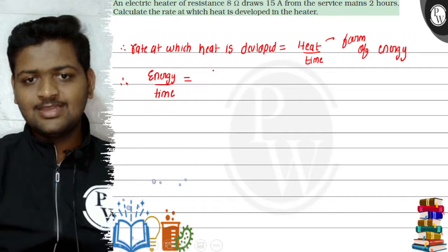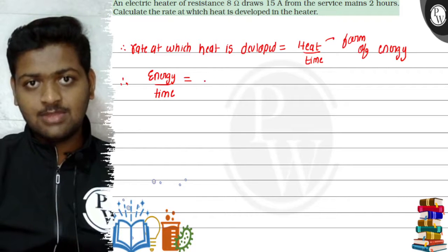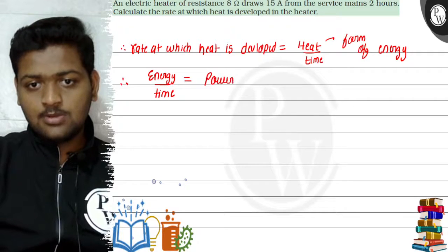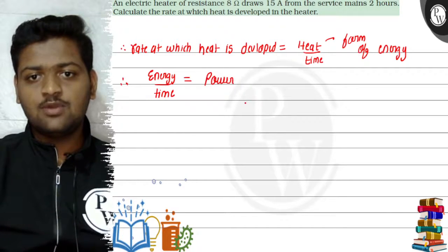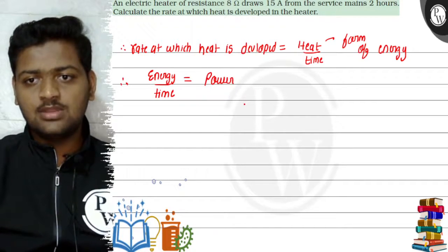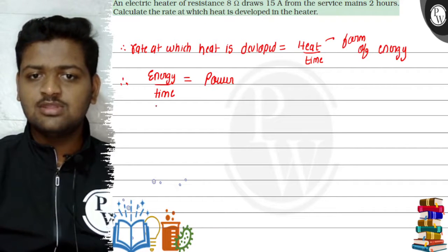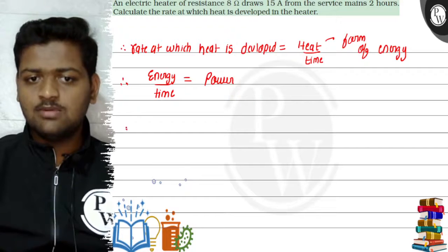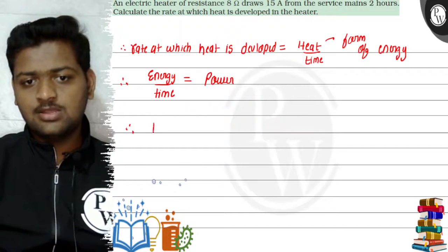And energy upon time can be called as electrical power. Energy upon time is nothing but the basic formula of electrical power. Now what we will do is, since we know that the rate at which heat is developed is nothing but electrical power, we will simply derive electrical power.